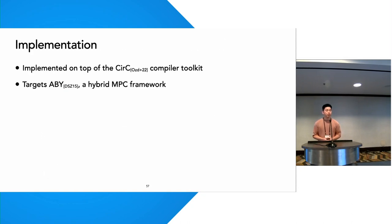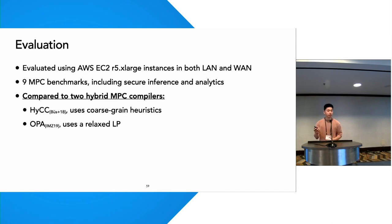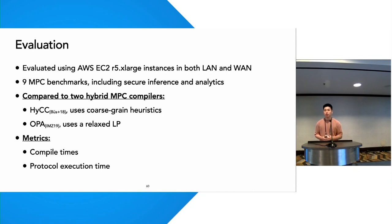For our implementation, we implemented SILF on top of the CERC compiler toolkit, targeting ABY, a two-party semi-honest hybrid MPC framework. We evaluated our system on AWS in both local and wide area network settings, testing against nine existing MPC benchmarks including workloads from secure inference and database analytics. We compared against two hybrid MPC compilers: HiCC, which uses coarse-grained heuristics for protocol assignment, and OPA, which uses a relaxed LP. We compared primarily on compile times — factoring in program compile time and hybrid protocol assignment solving time — as well as protocol execution time.